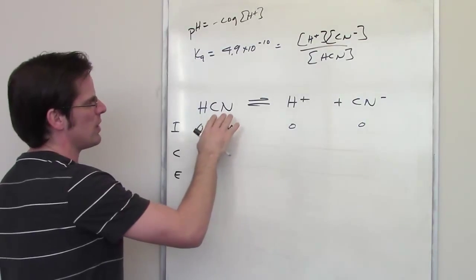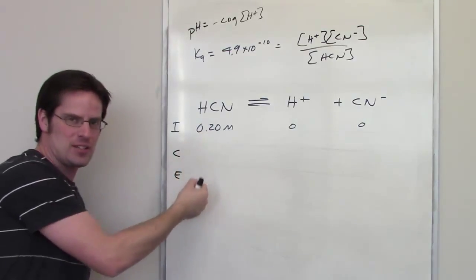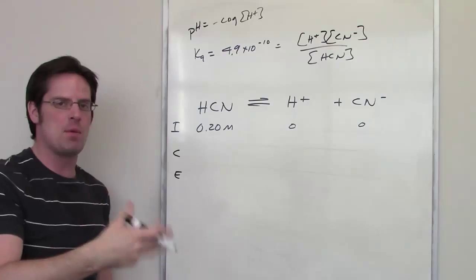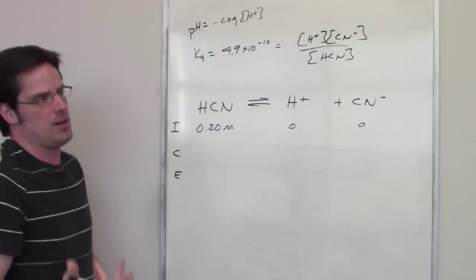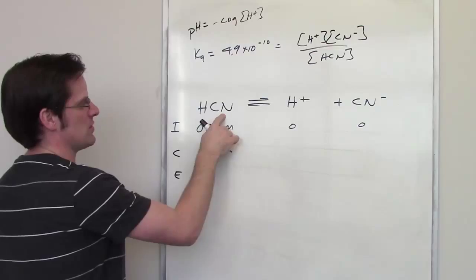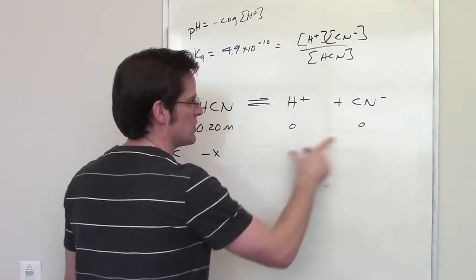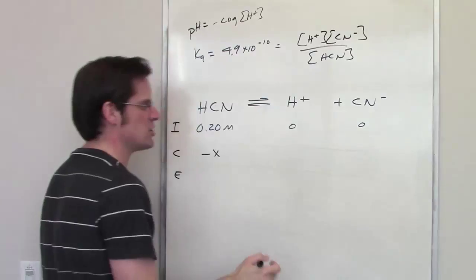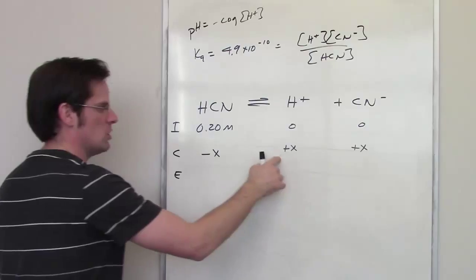Now, what's going to happen is this thing is going to float around in solution, go back and forth, and the concentration of this is going to decrease, while the concentrations of these two are going to increase by some amount until we reach equilibrium. By what amount is it going to be? I don't know. I'm just going to call this amount minus x. The concentration of this goes down by an amount x. Now, proportionally speaking, by what amounts will the concentrations of each of these go up? Well, because it's present in a 1 to 1 to 1 ratio, each of these concentrations also has to go up by x.